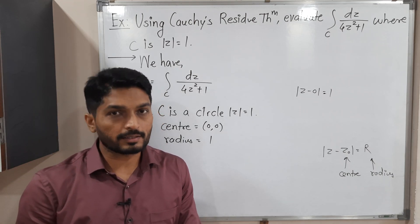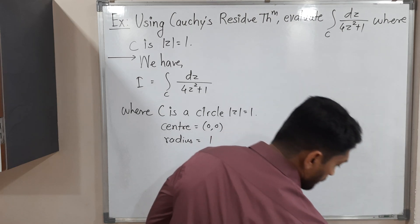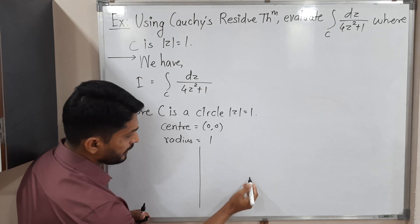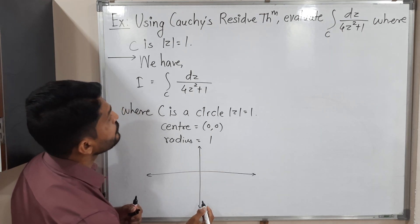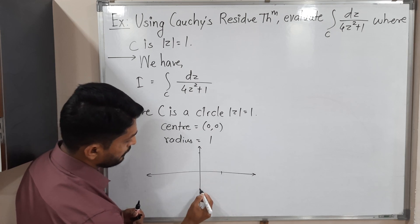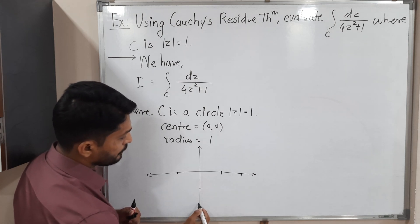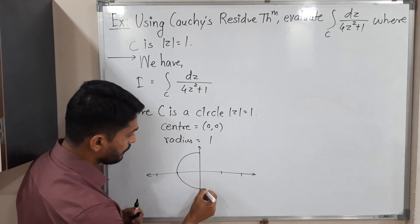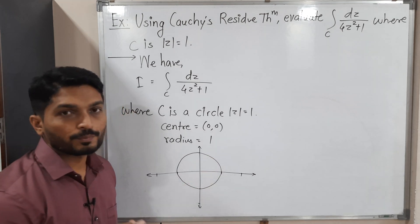Let us draw that circle. This is the imaginary axis and this is the real axis. We mark 1, -1 on both axes and draw the circle with center (0, 0) and radius 1.